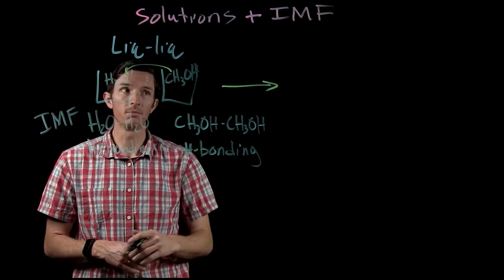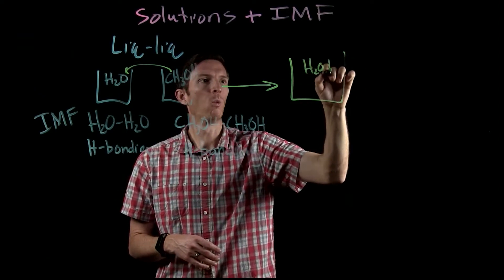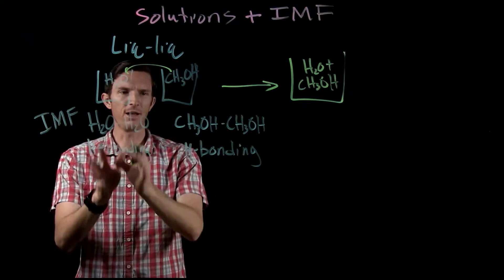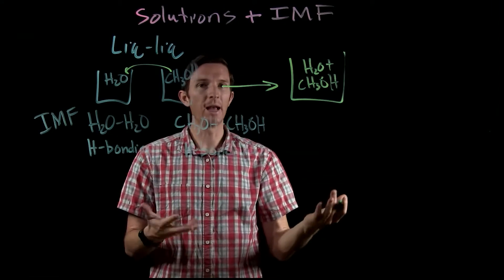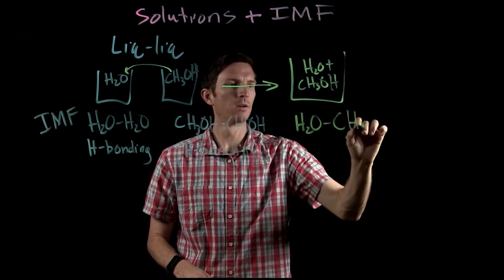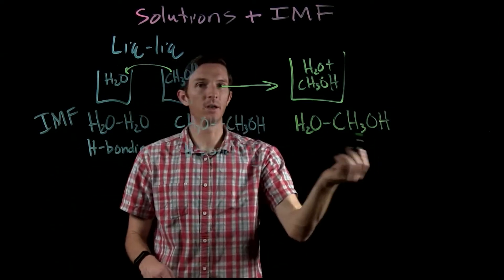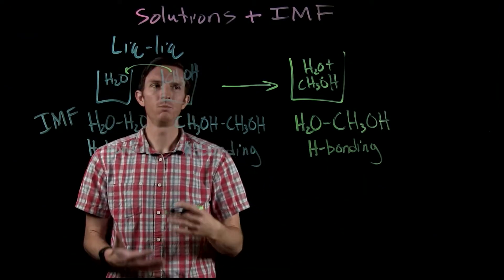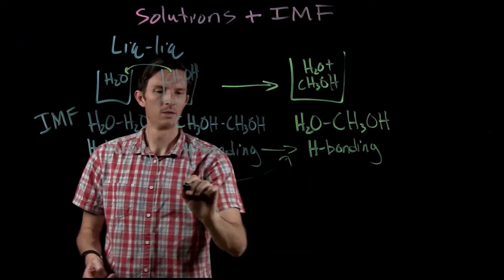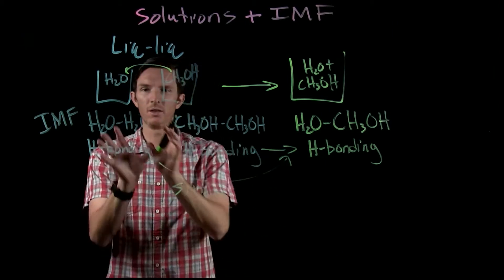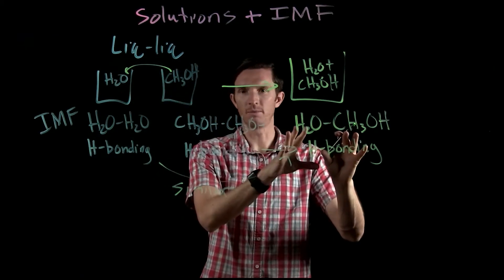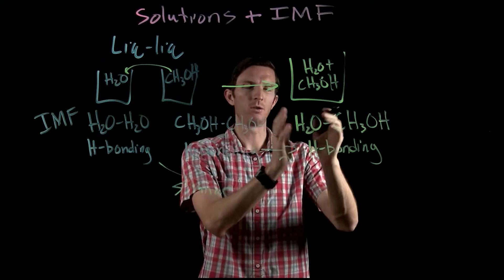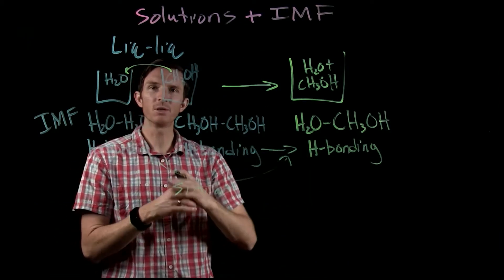Now let's say we pour methanol into the water beaker, so now we have both water and methanol together. We want to look at what's different between these two scenarios. The new force that's now present is the attraction of water to methanol. Both of these molecules have the ability to undergo hydrogen bonding, so water and methanol can hydrogen bond with each other. We can see they have similar strengths of attraction — water-water, methanol-methanol, and water-methanol are all hydrogen bonding interactions.